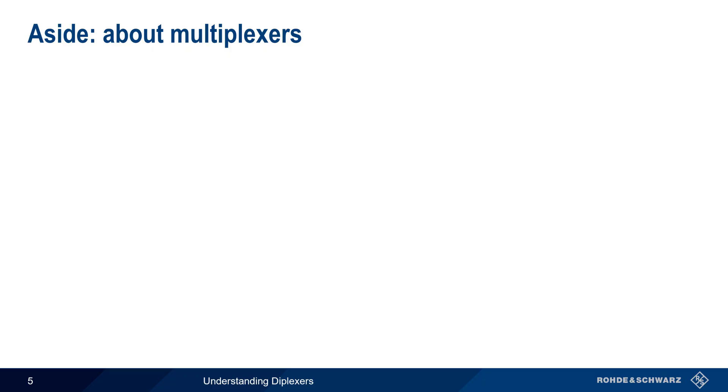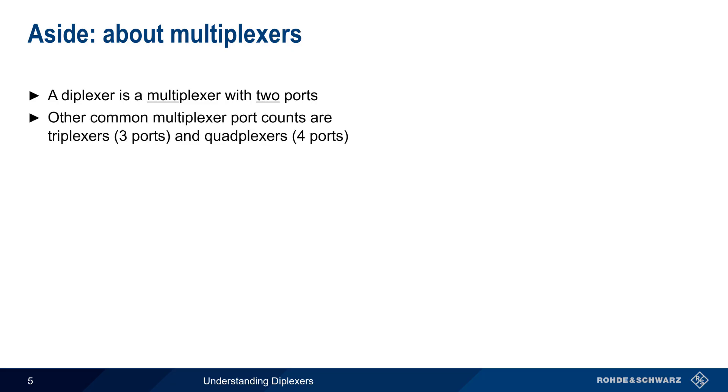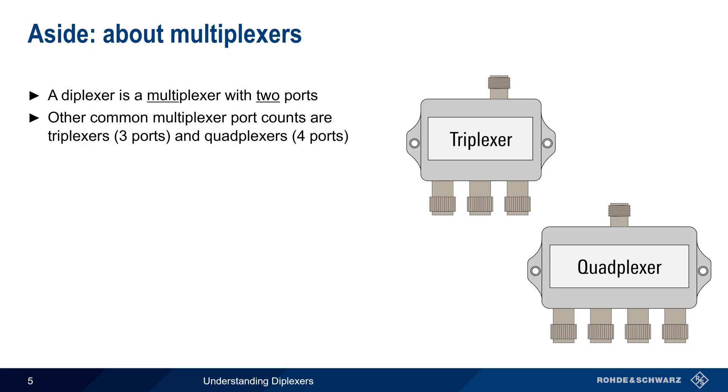Before moving on, it's worth pointing out that diplexors are essentially two-port multiplexors. Although we'll be focusing on diplexors in this presentation, it's not uncommon to find multiplexors with higher port counts, such as triplexors with three ports or quadplexors with four ports.